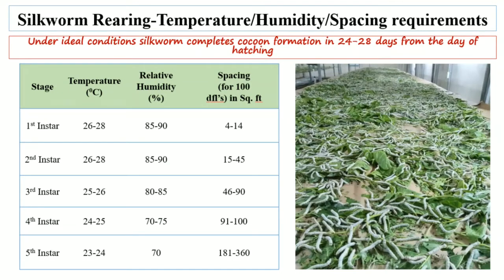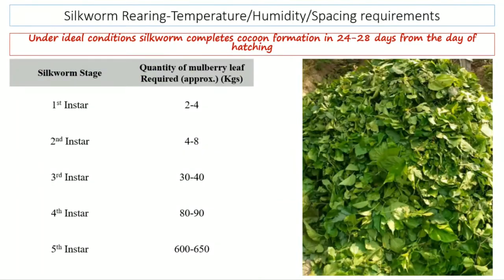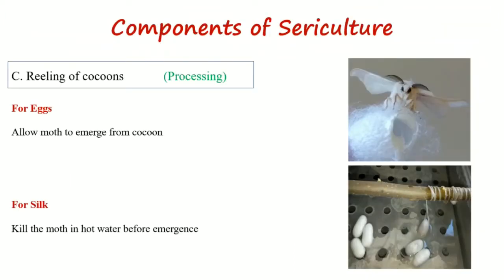Next is the quantity of mulberry leaves required per 100 disease-free layings during different instar stages. During the first instar, 2 to 4 kilograms of mulberry leaves are required. During the second instar, 4 to 8 kilograms are required. Third instar requires 30 to 40 kilograms. Fourth instar requires 80 to 90 kilograms. The fifth and final instar stage requires 600 to 650 kilograms of mulberry leaves.